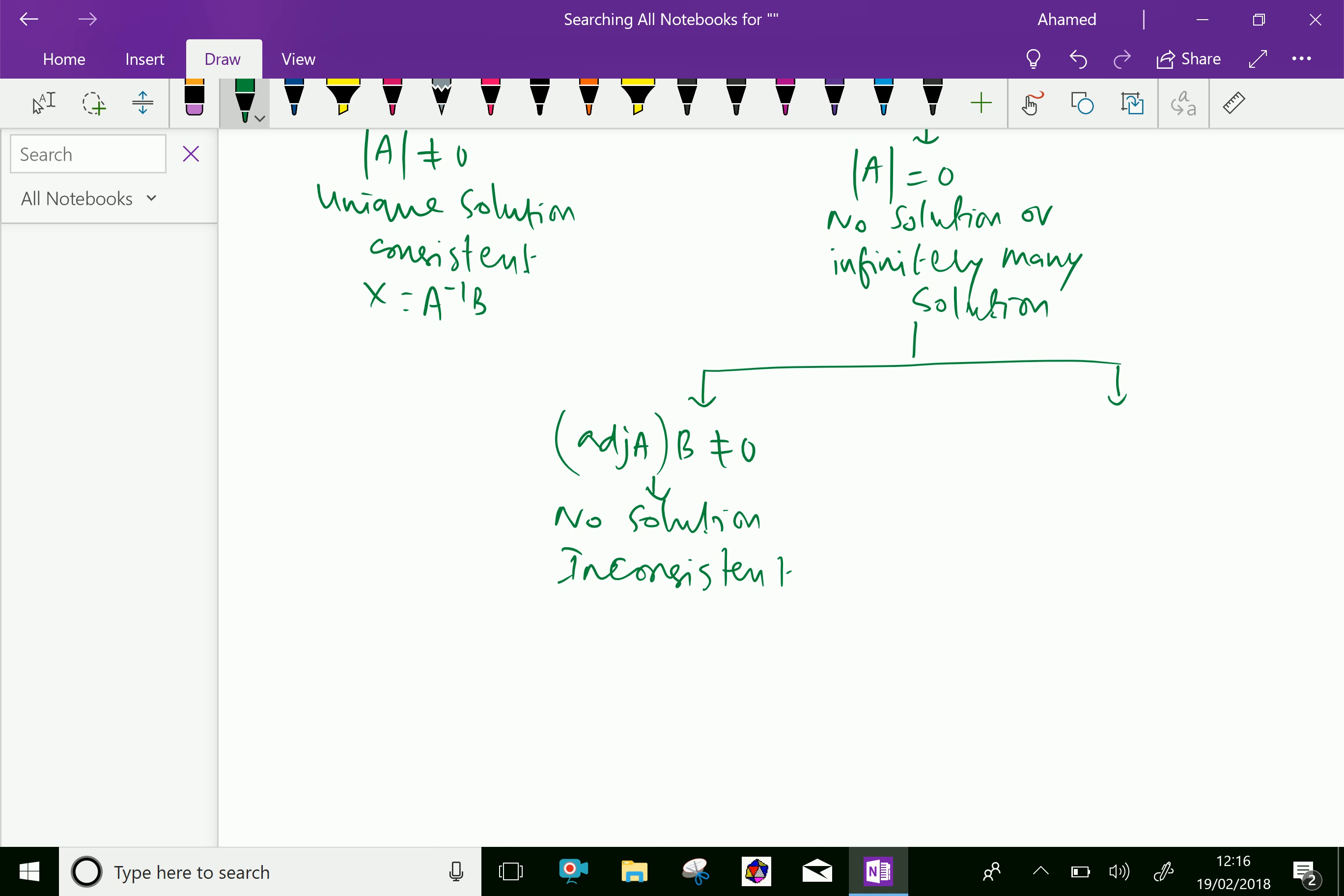If adjoint A into B is equal to zero, then it has infinitely many solutions. That means it is consistent.